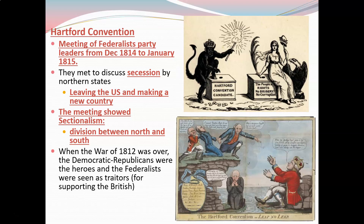Here's the tricky part: the Hartford Convention was going on during this time — after the armistice and before the Battle of New Orleans. The Federalists supported Britain and didn't like the war. They discussed the idea of seceding from the Union, with northern states making their own country. This is one of the first times we see sectionalism in the country. We often think the South was the only group that ever tried to secede, but in fact the North tried to secede because they wanted to support the British — about 50 years before the Union divided in the Civil War.